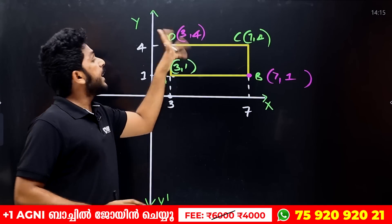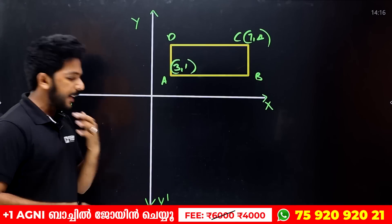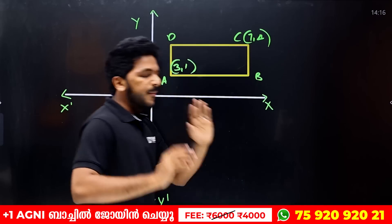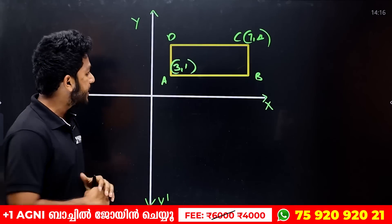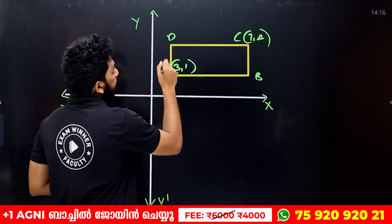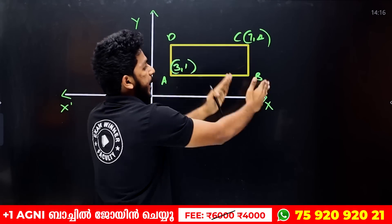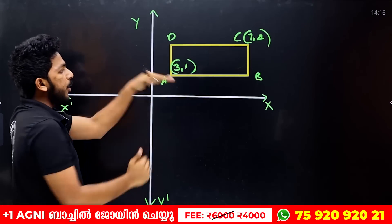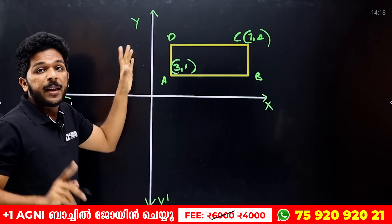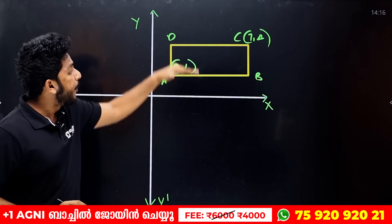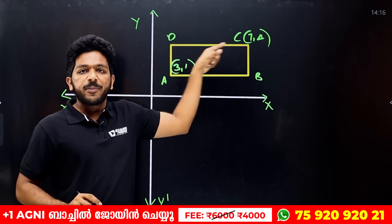That is the first method. Now let's look at the second method. Think of x and y like left-to-right and up-down directions — like a building and its floors. A and D share the same floor level, and B and C share the same floor level.